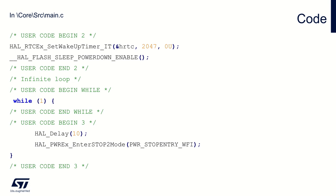Then in a simple while loop, I will simulate data processing execution using a HAL delay of 10 milliseconds — just a while loop waiting 10 milliseconds so the core stays in run mode. After this 10-millisecond period, I will go to Stop 2 mode, and when the CPU wakes up the cycle will repeat.